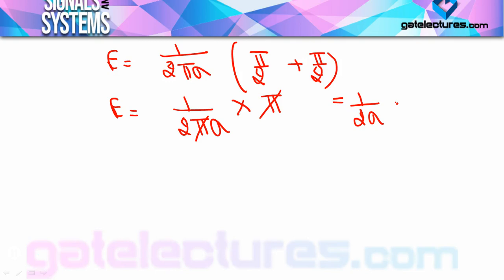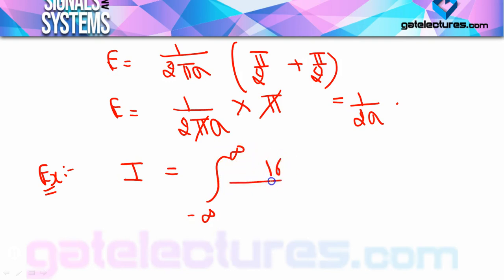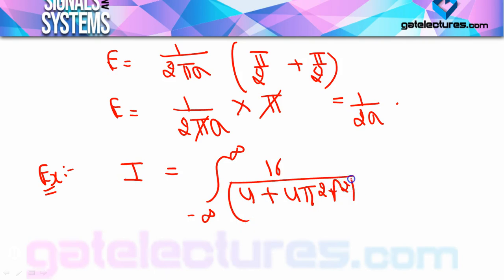यह जो theorem होता है आपका, it is called Rayleigh Energy Theorem। Rayleigh Energy Theorem में बहुत सारे uses हैं। जरूरी नहीं कि सिर्फ energy निकालने के लिए करें — आप और भी integrations के लिए use कर सकते हैं। Suppose आपको solve करना है: ∫₋∞^∞ 16/[(4+4π²f²)²] df — यह integration solve करने बोला गया है।